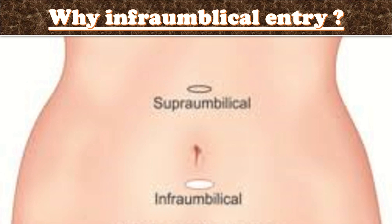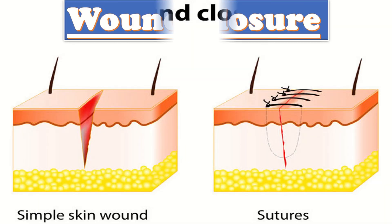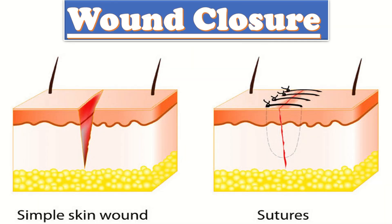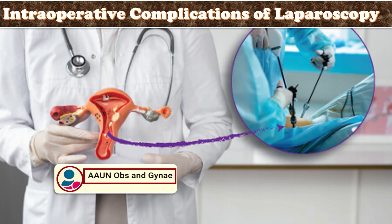On removal of the laparoscope, check by direct visualization that there are no evidences of injury to the bowel or adherence under the umbilicus. Wound closure: proper closure of the fascia within the umbilical port site is done to prevent wound dehiscence or hernia. Close the sheath if the midline port is more than 7mm and the lateral port is more than 5mm.